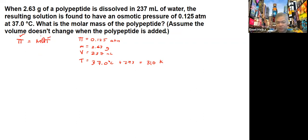And the other stuff is within that. So π over RT equals molarity. We have 0.125 atmosphere divided by 0.0821 liter atmosphere per K mol times 310 K.